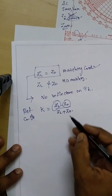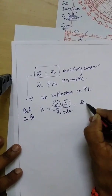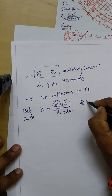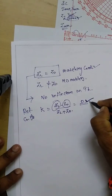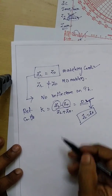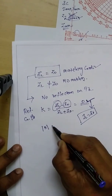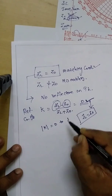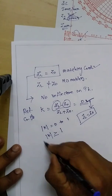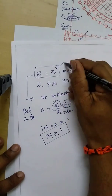If ZL equals Z0, both are the same, so when you subtract them the answer is 0. This means when there is no reflection on the transmission line, your load and characteristic impedance are equal. When these two are not equal, you get some K value, and that K value varies from 0 to 1 — the reflection coefficient K will not go beyond 1.